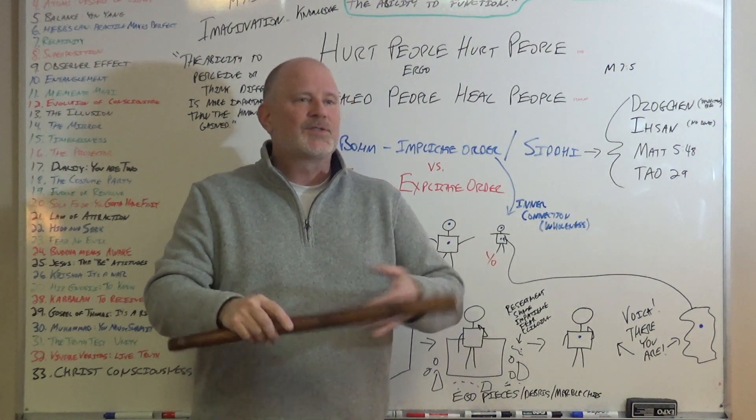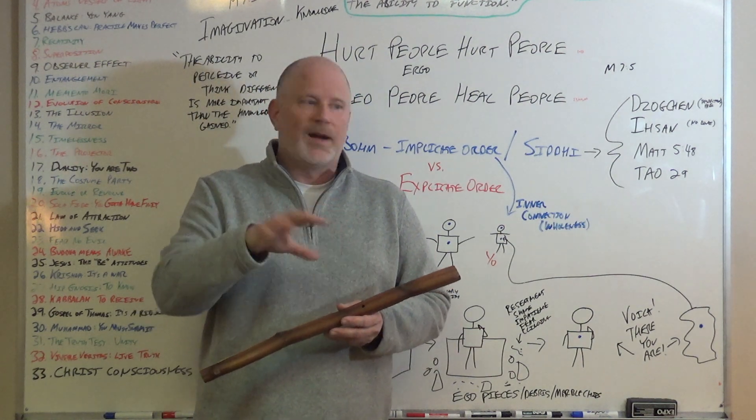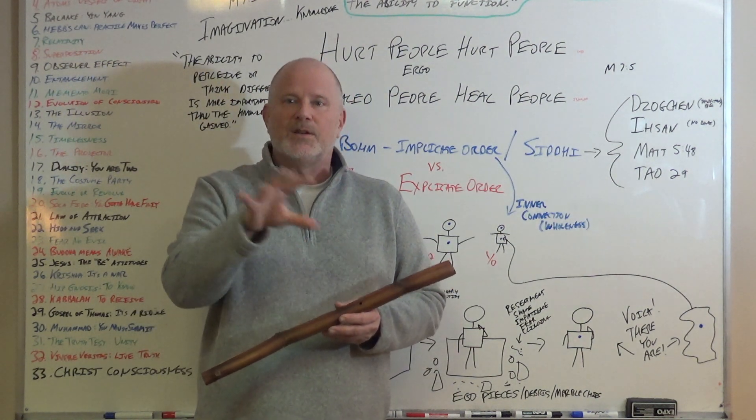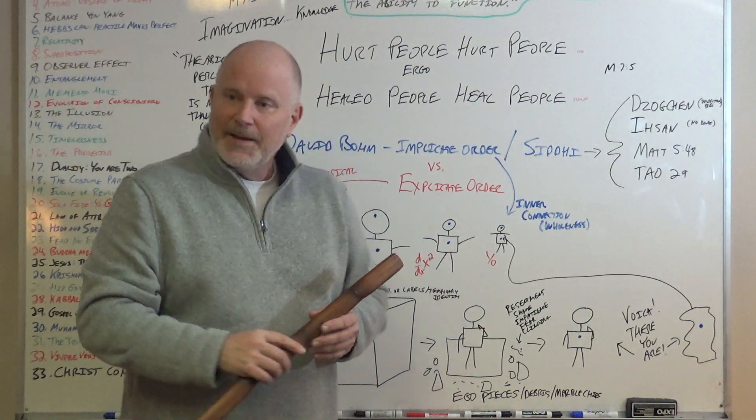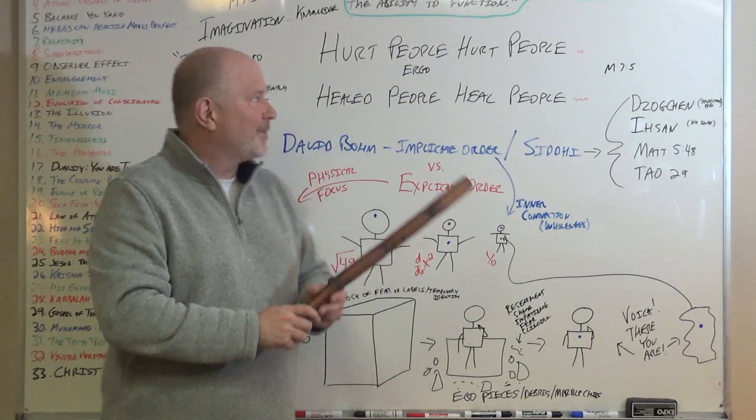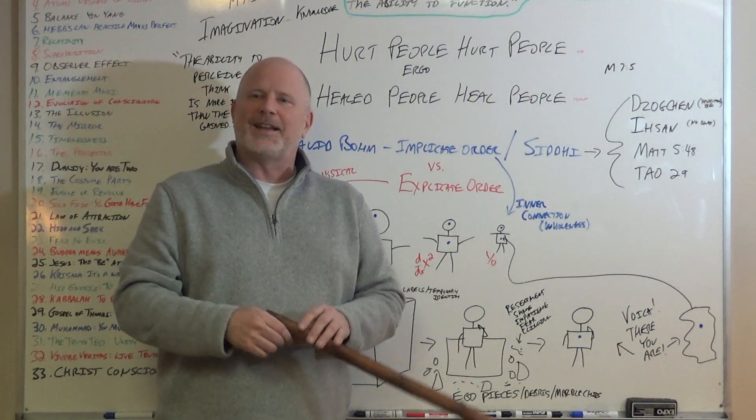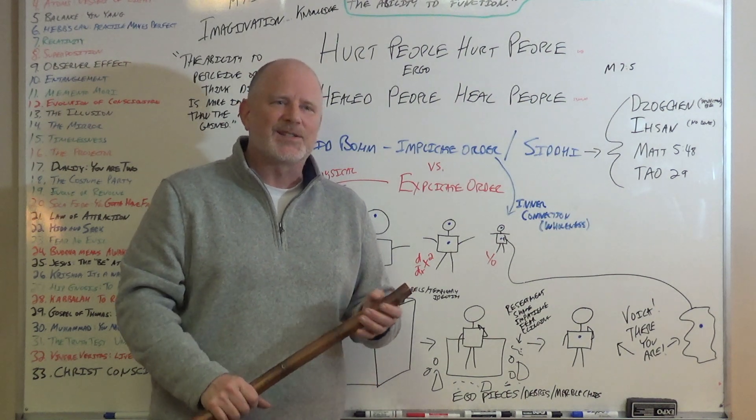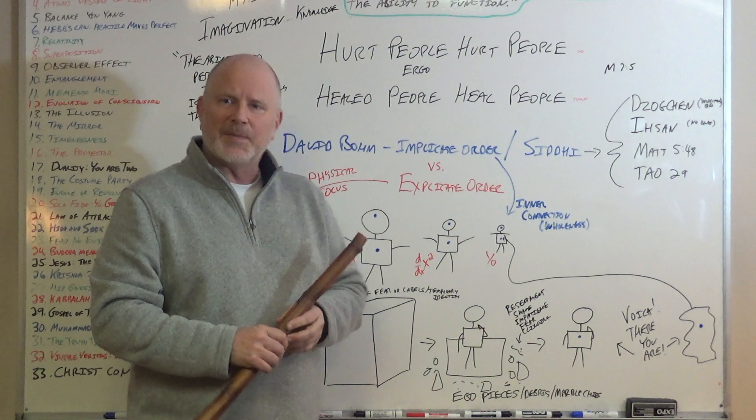Why does Buddha say strive for your own liberation with diligence? Because I have a duty. Before I look at you and judge you and tell you what to do and this is how you should be, I have to figure something very important out. Linked to that is this concept: hurt people hurt people. We've all heard that before. It's just logic. Hurt people hurt people.